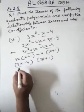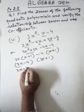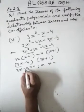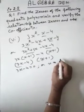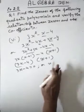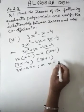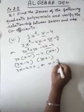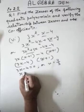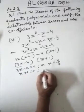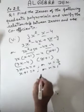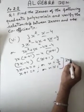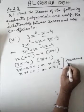To find the zeros: 3x minus 4 is equal to 0, so x is equal to 4 upon 3. Similarly, x plus 1 is equal to 0, so x is equal to minus 1.